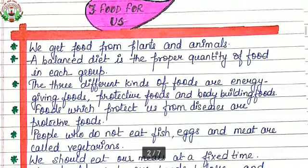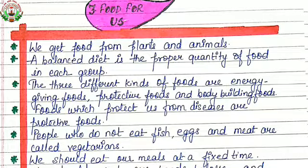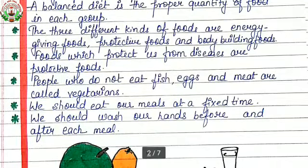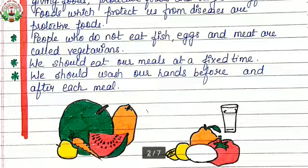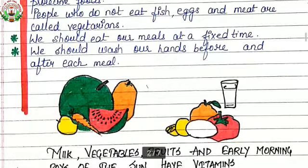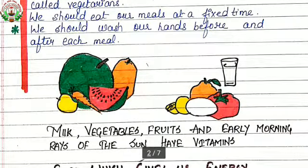Lesson number three, Food for Us. We get food from plants and animals. A balanced diet is the proper quantity of food in each group. The three different kinds of foods are energy giving foods, protective foods and body building foods. Food which protects us from diseases is called protective food. People who do not eat fish, eggs and meat are called vegetarians. We should eat our meals at a fixed time and wash our hands before and after each meal.